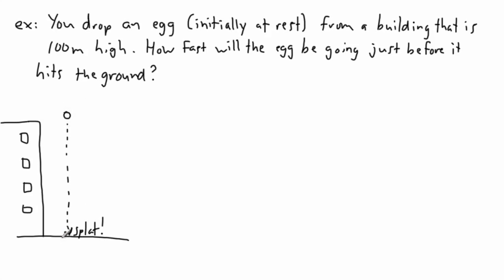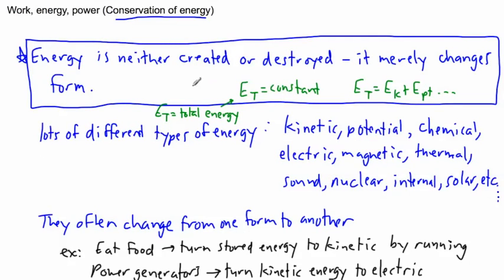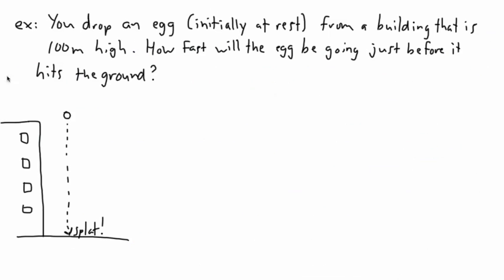The question is how fast is it going when it hits the ground? There's two ways, or two easy ways at least, of solving this. One is to use what we've looked at before. Because the egg is under the influence of gravity and gravitational force will be constant, we have constant acceleration. So we could use the equations of accelerated motion, of uniform accelerated motion. But I want to show you using energy. It turns out this is really helpful for us.